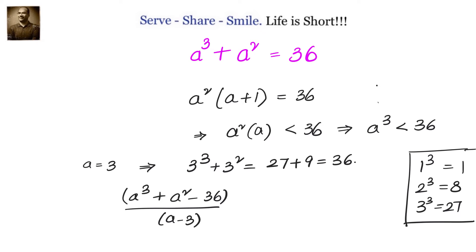Let us do synthetic division. We will take the coefficients of A³, A², A, and the constant term: they will be 1, 1, 0, and -36. Then we will write down 0, we will club them, 1 + 0 = 1.